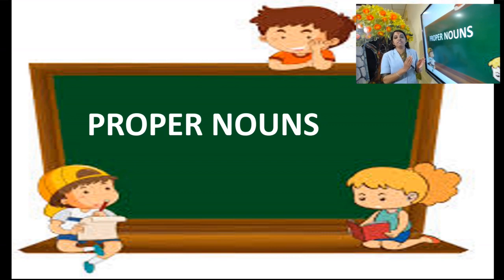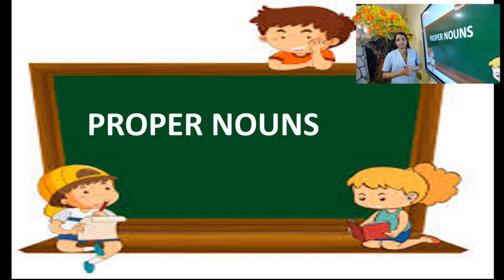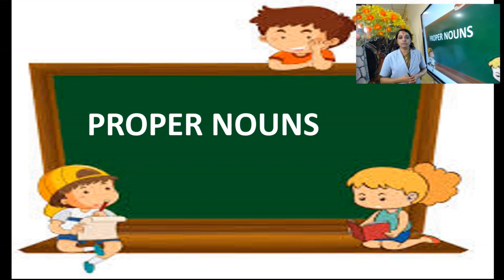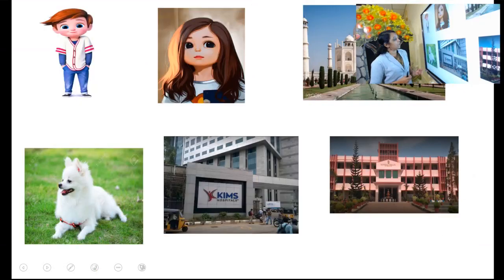A proper noun is a name given in particular to a person, place, thing, or animal. For example, if I say a dog, it's a common noun because all kinds of that particular animal are named as dog. If I say chair, hen, or a lady — those are common nouns. But if I mention myself as Prita, that is the particular name given to me. Teacher is a common noun, but my name Prita is a proper noun — the name given in particular.